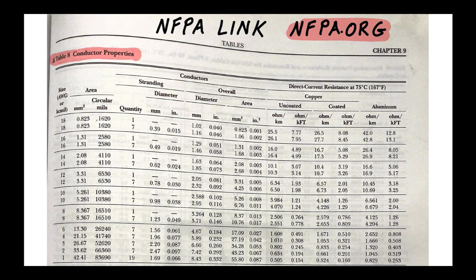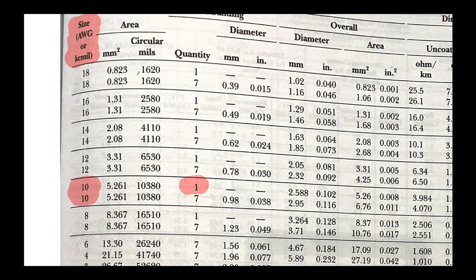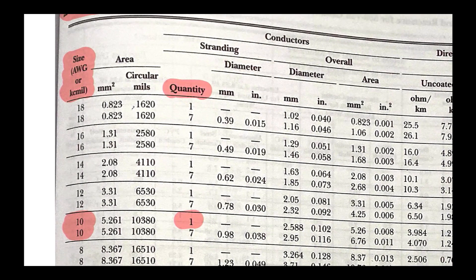We're going to find 10 AWG, and we see it listed twice. Let me zoom in so you can see — it's listed twice. Over here we have a number 1 and a number 7: number 1 means solid, number 7 means stranded with seven strands. Since we're looking for solid, we look at number 1 in the column called 'Quantity.' It's actually easy once you understand how it's structured.